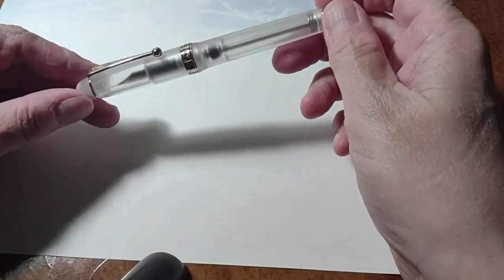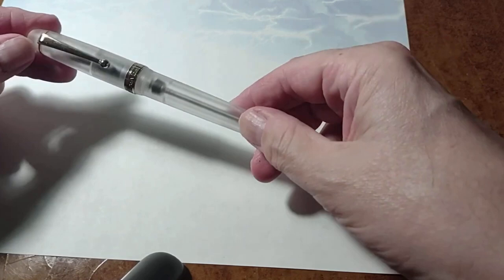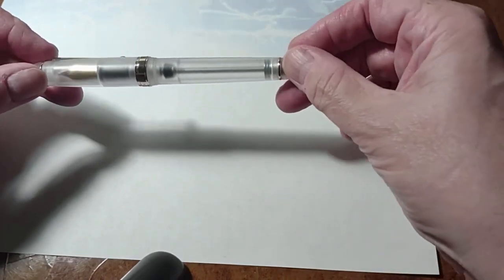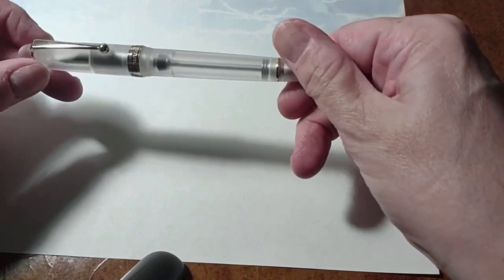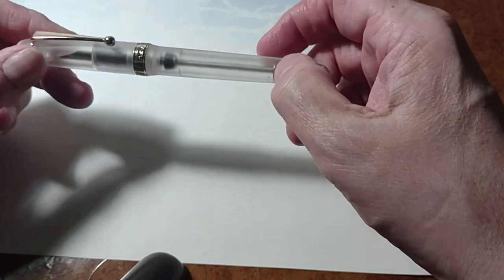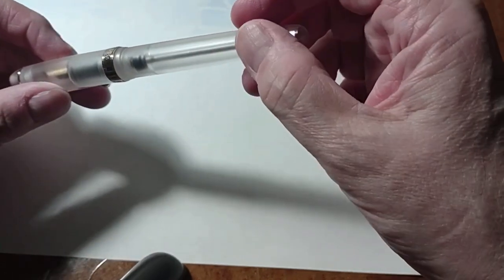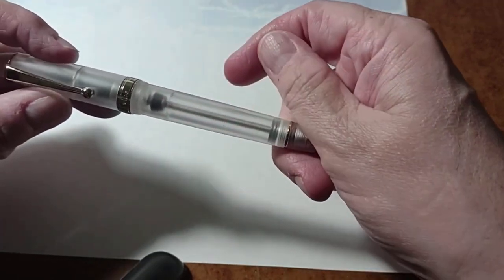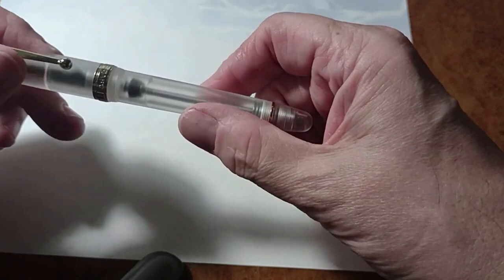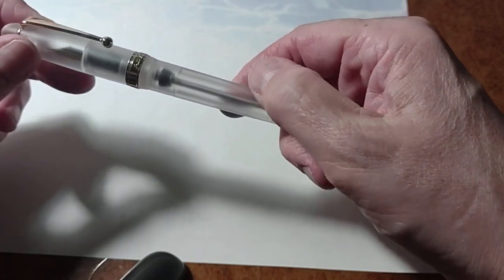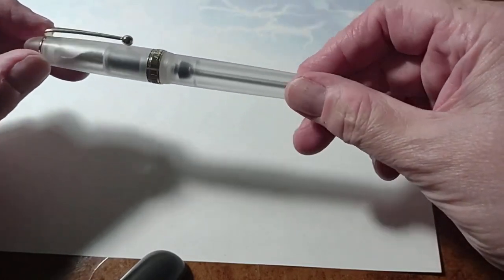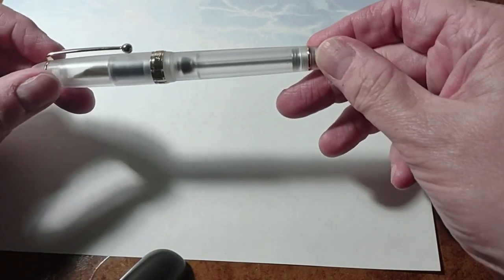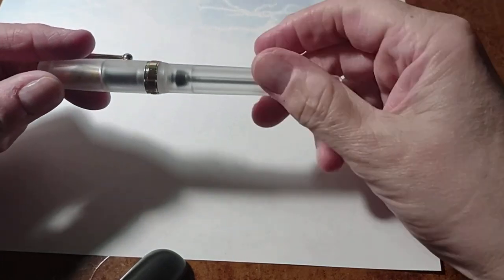So let's take a quick look at the Asfine V126. You can see the overall design similarity to the Pilot Custom 823, Wingsung 699. But this has some unique features of its own. One is the really nice frosted acrylic in this translucent but almost transparent pen. Kind of a classic torpedo shape variation of course.